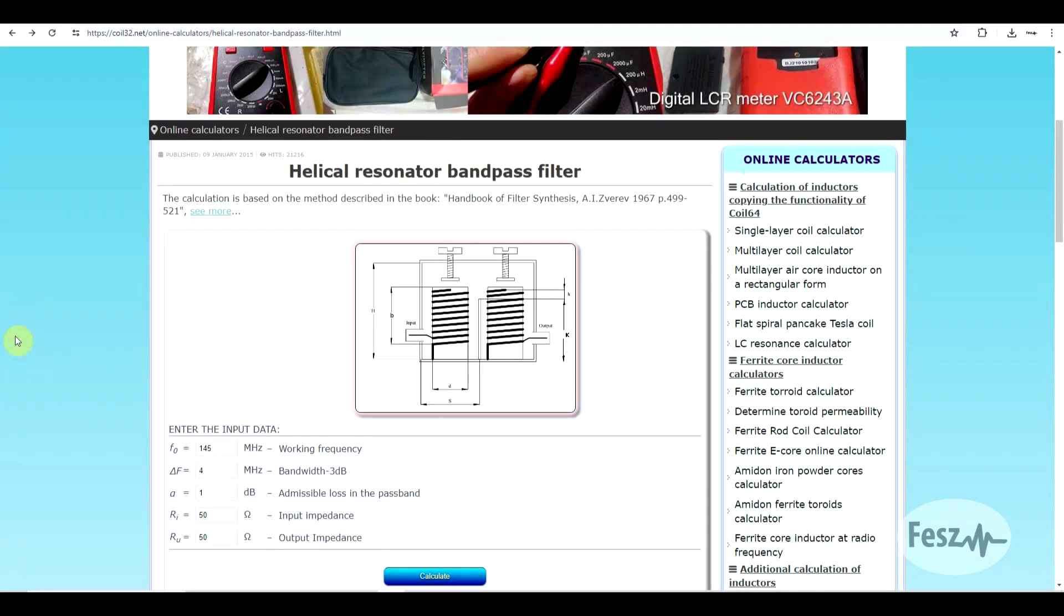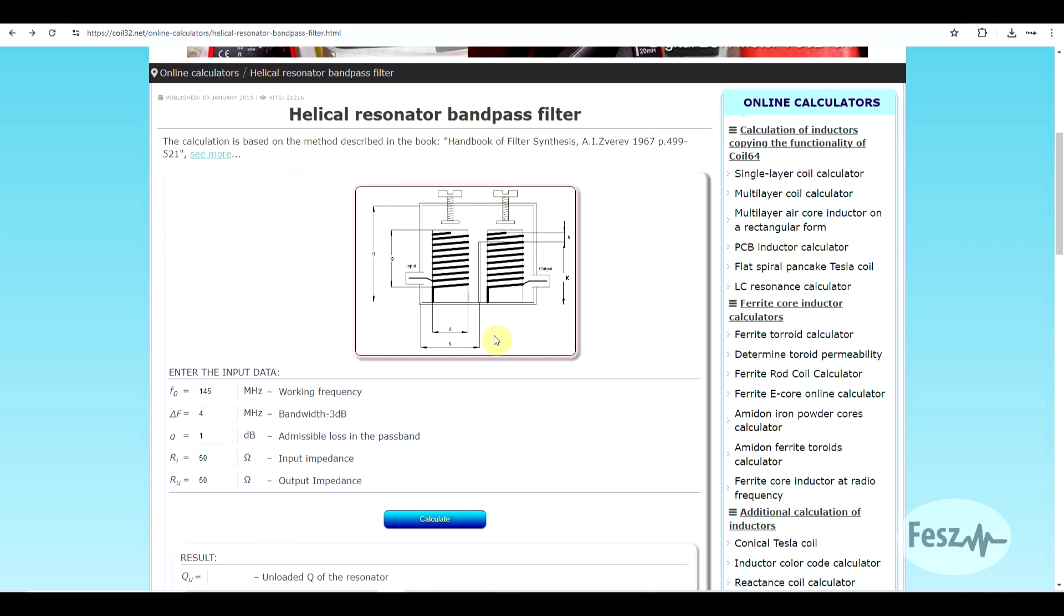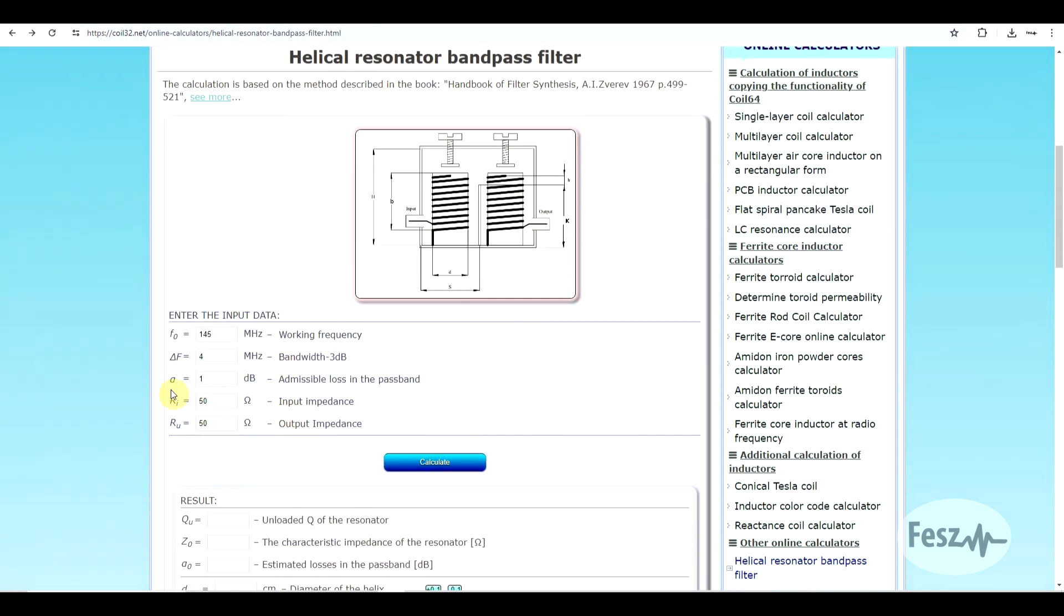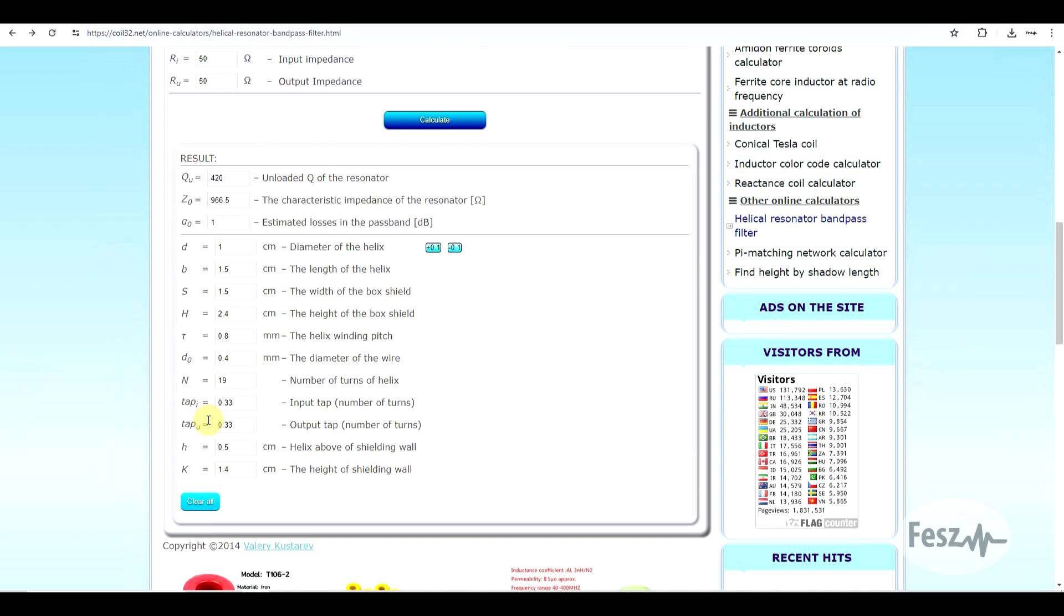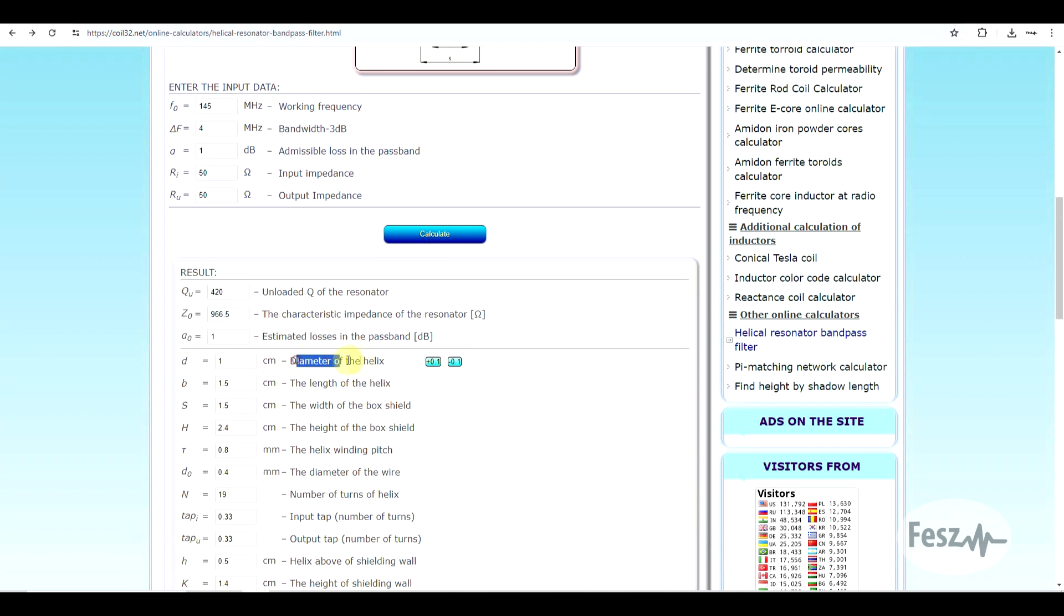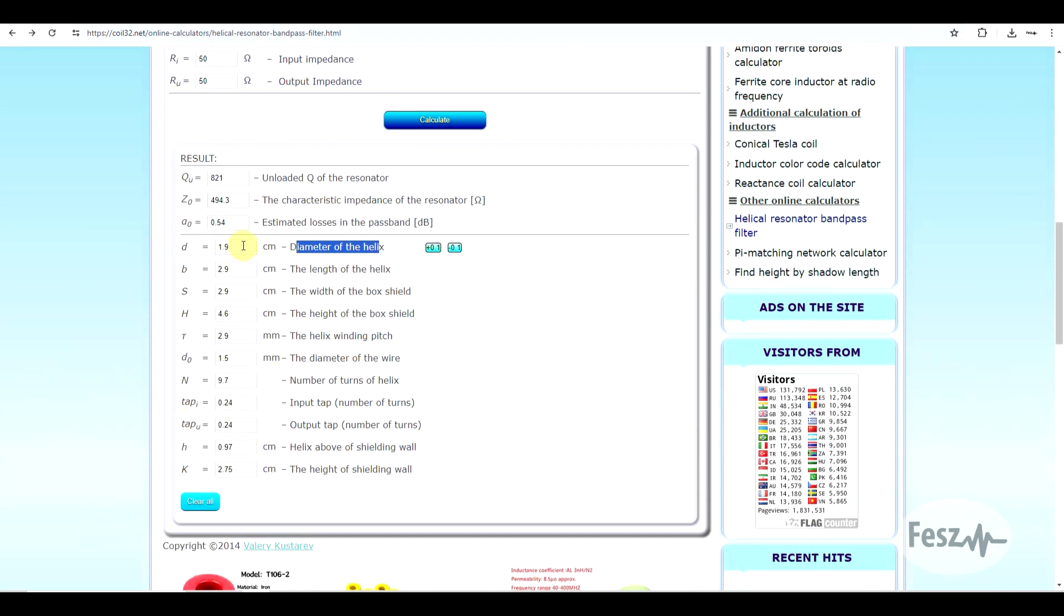To calculate this last type of filter, I use this online helical resonator band pass filter calculation tool. This is based on the work of A.I. Zverev from the book Handbook of Filter Synthesis. There's some more details if you want to read about how the filter is being calculated. But anyway, you have a graphical representation of how the filter is supposed to look, what are the various dimensions. And once you input your filter parameters like center frequency, bandwidth, loss in the passband, and input and output impedance, you can hit calculate and you will get the various dimensions that are needed to actually build the filter. And if you want to make various adjustments, one of the things that you can play around with is the helix diameter. So if you want to make it bigger or smaller, this will impact the various other values.